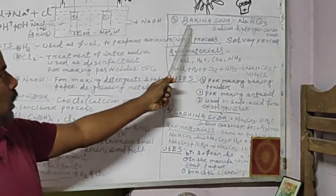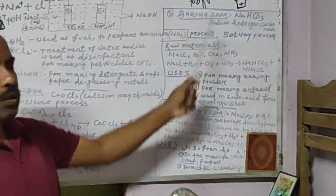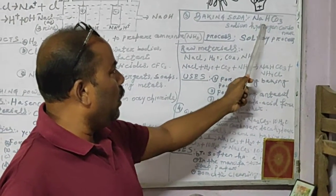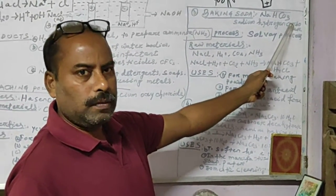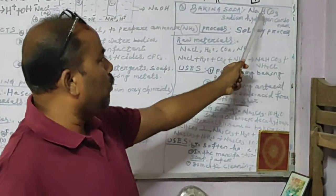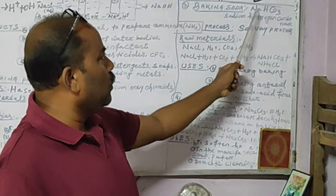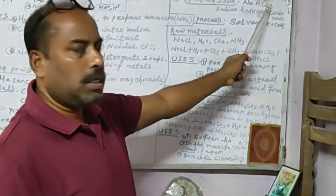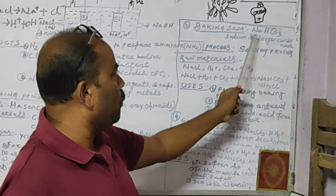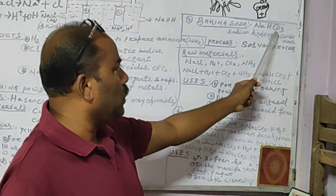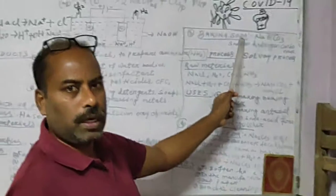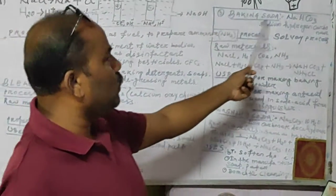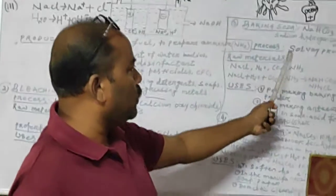The third compound is baking soda. Its chemical formula is NaHCO₃ and its chemical name is sodium hydrogen carbonate — sodium for Na, hydrogen for H, and carbonate for CO₃. It is commonly known as baking soda.